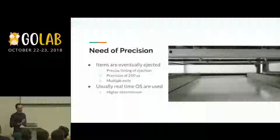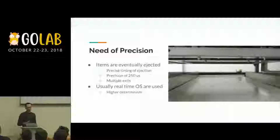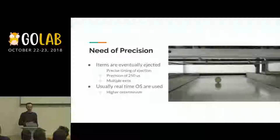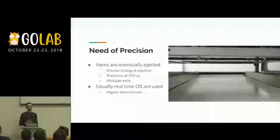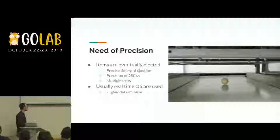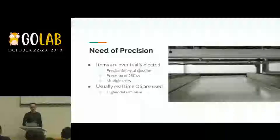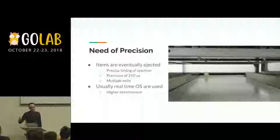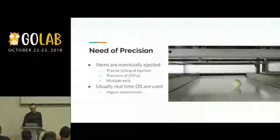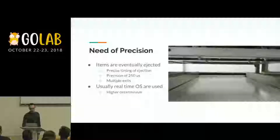These kinds of systems have to be very precise, because the object must be ejected at a very specific time — when it is just in front of its exit. For our system we could reach a precision of 250 microseconds, and we have multiple exits, so the most constraining one is the first exit. Usually a real-time operating system is used for this kind of machine because it can provide higher determinism.